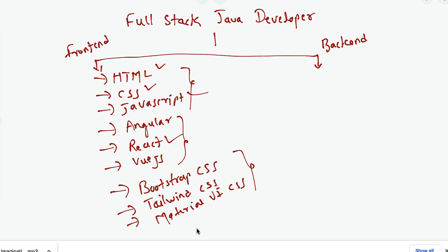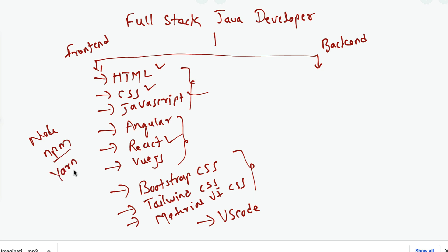You also need an IDE to develop the front end application — I suggest using Visual Studio Code. Apart from these, we also need to learn about Node.js, which provides the npm package manager. In order to manage JavaScript packages you need to know about npm or yarn. In Java we have Maven which manages dependencies; in front end we have npm or yarn to manage JavaScript packages.